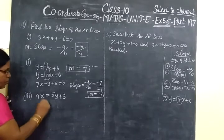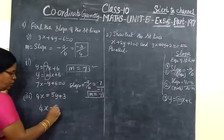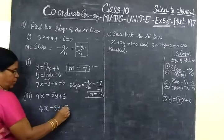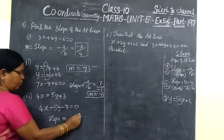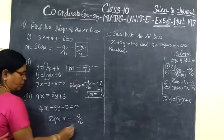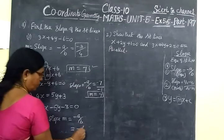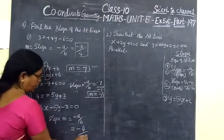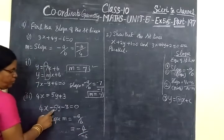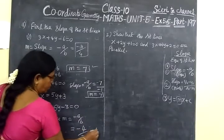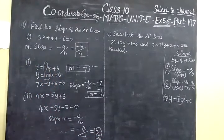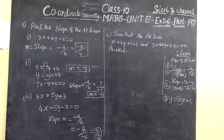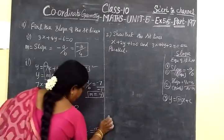Now x should be positive, so bring this to this side: 4x minus 5y minus 3 equals 0. So slope m equals formula minus a by b. So minus a value 4, b value minus 5. Minus minus cancel. So slope equals 4 by 5. So now you check the answer. First answer minus 3 by 4, second answer 7, here 4 by 5. So obviously the answer is correct.